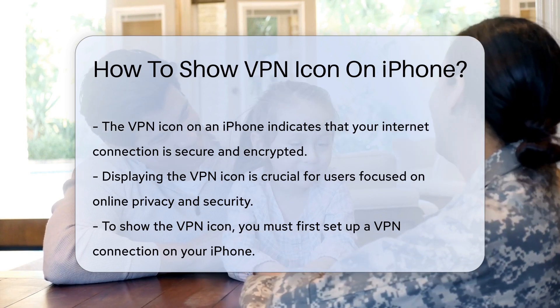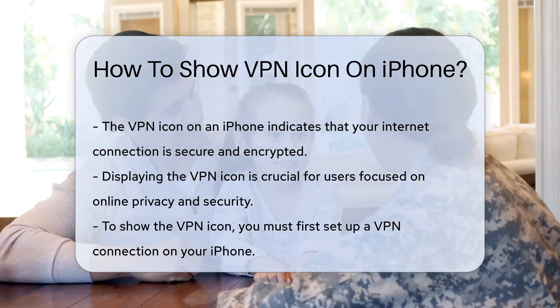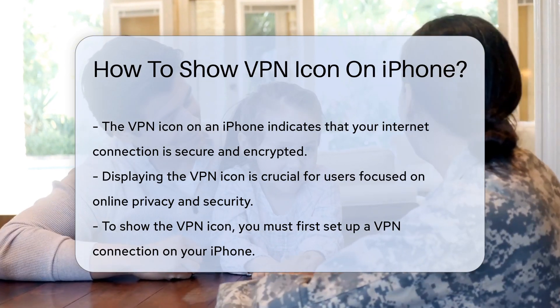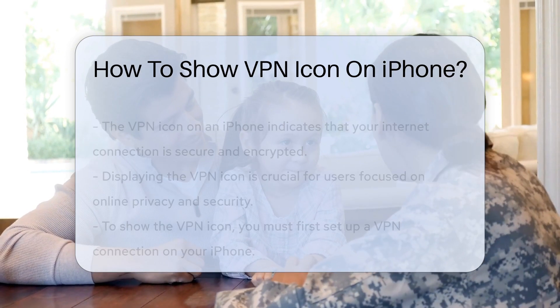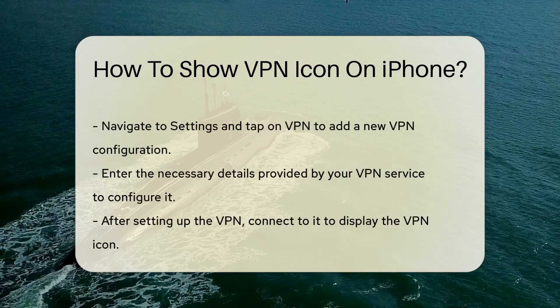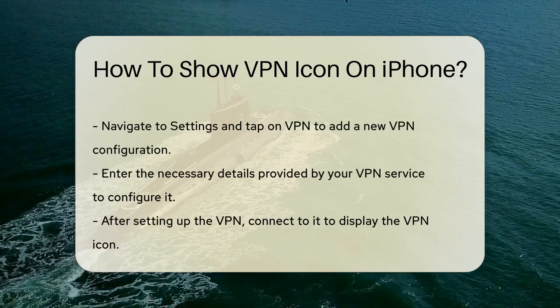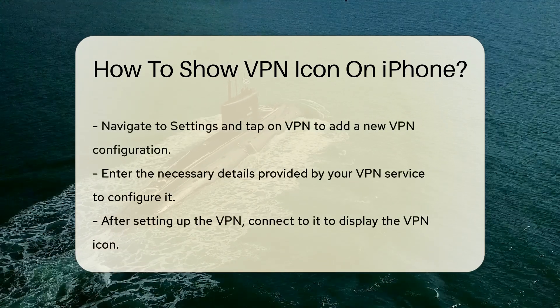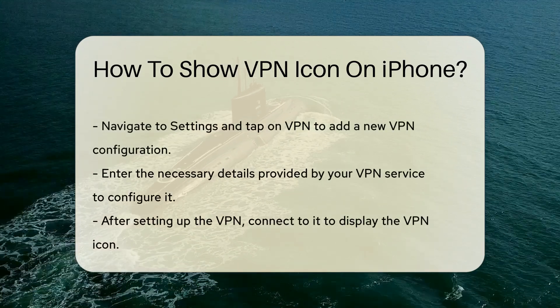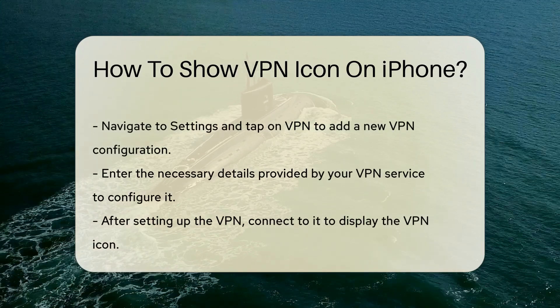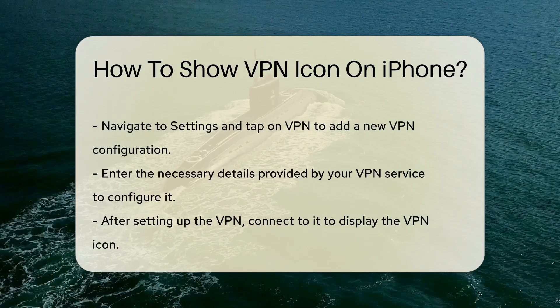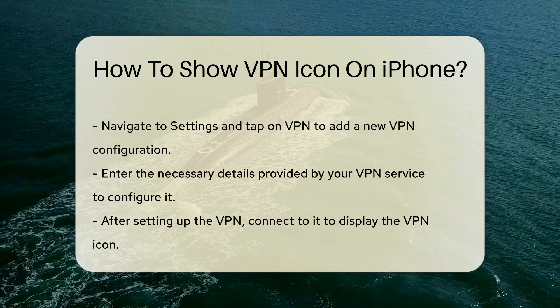This can be done through the iPhone settings. Navigate to Settings, then tap on VPN. Here, you can add a new VPN configuration by entering the necessary details provided by your VPN service.